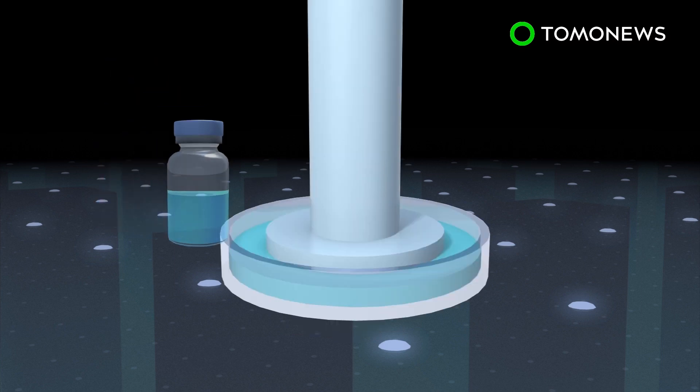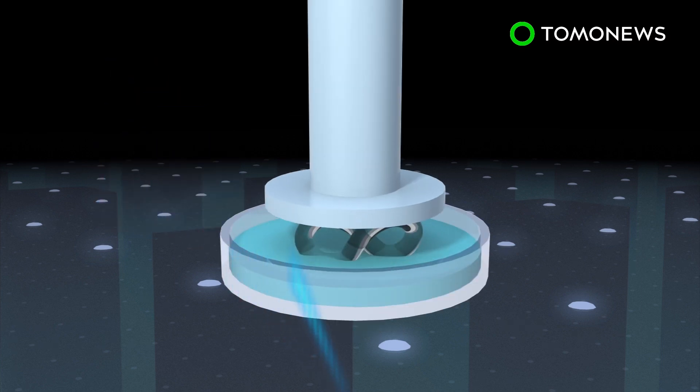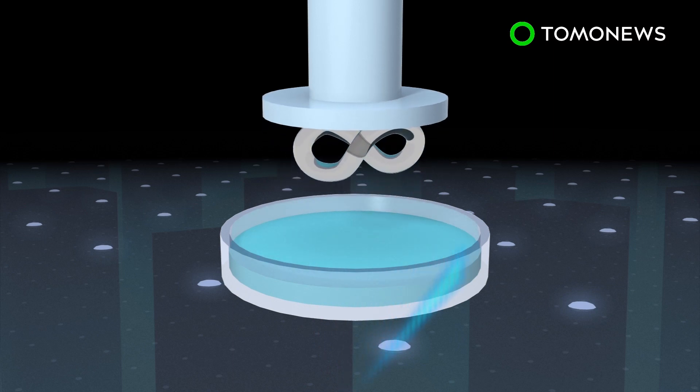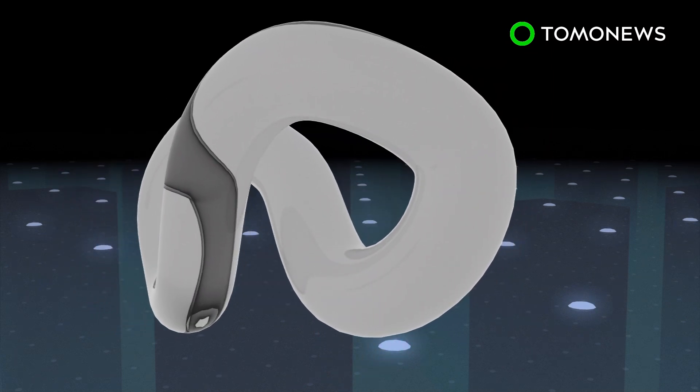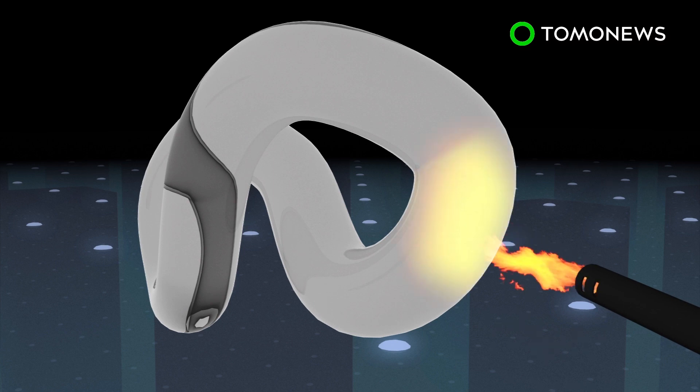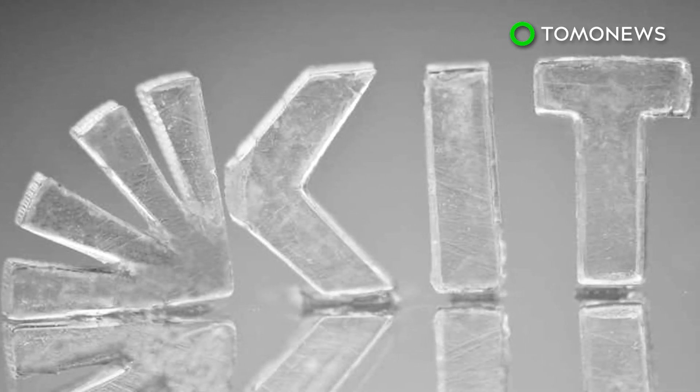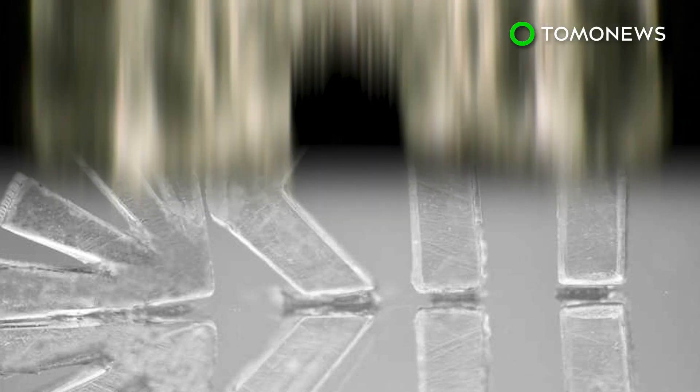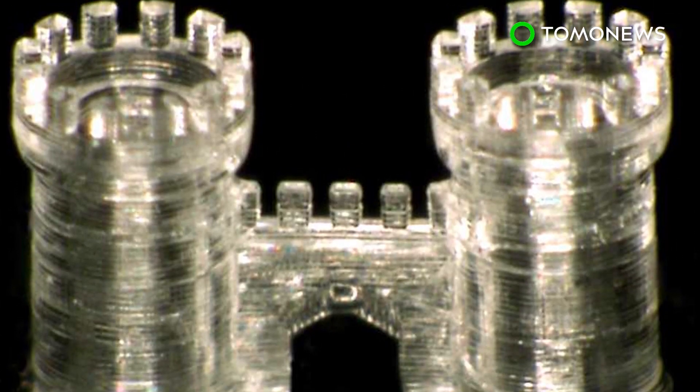Through a method known as stereolithography, the mixture is shaped and hardened after exposure to UV light. Any remaining liquid is burnt away by high heat, which further fuses the glass nanoparticles together. Researchers say the 3D-printed glass can be used for anything from building skyscraper facades to camera lenses for smartphones.